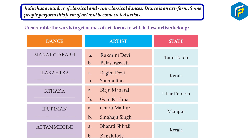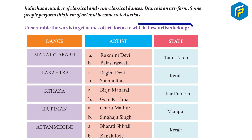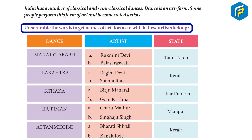Dance is an art form. Some people perform this form of art and become noted artists. Unscramble the words to get names of art forms to which these artists belong.